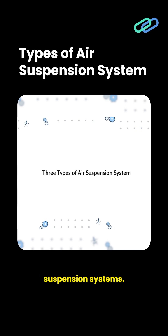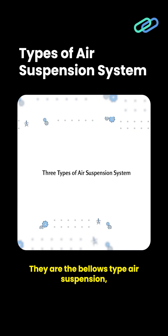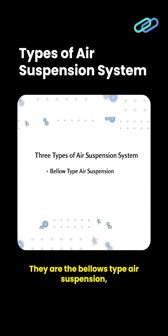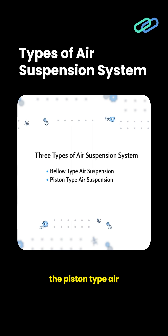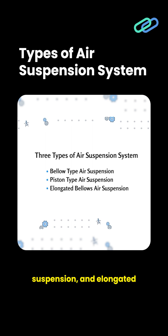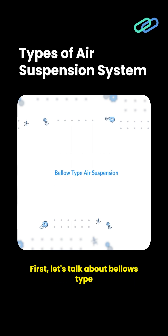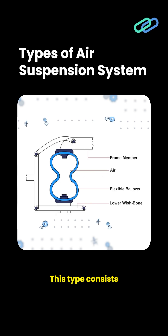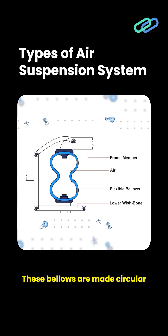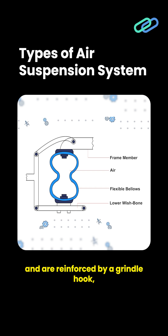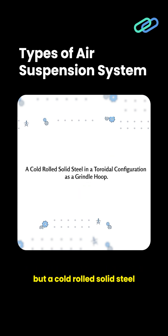There are three types of air suspension systems: the bellow type air suspension, the piston type air suspension, and elongated bellows air suspension. First, let's talk about bellow type air suspension. This type consists of convoluted rubber bellows. These bellows are made circular and are reinforced by a girdle hoop, which is a cold rolled solid steel in a toroidal configuration.